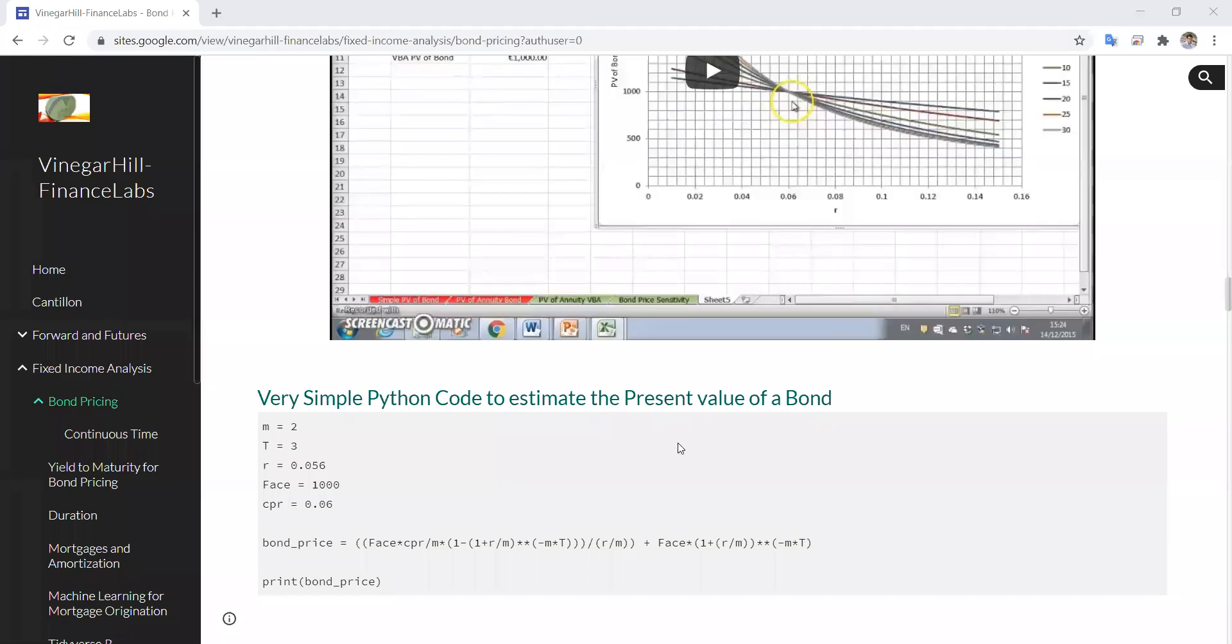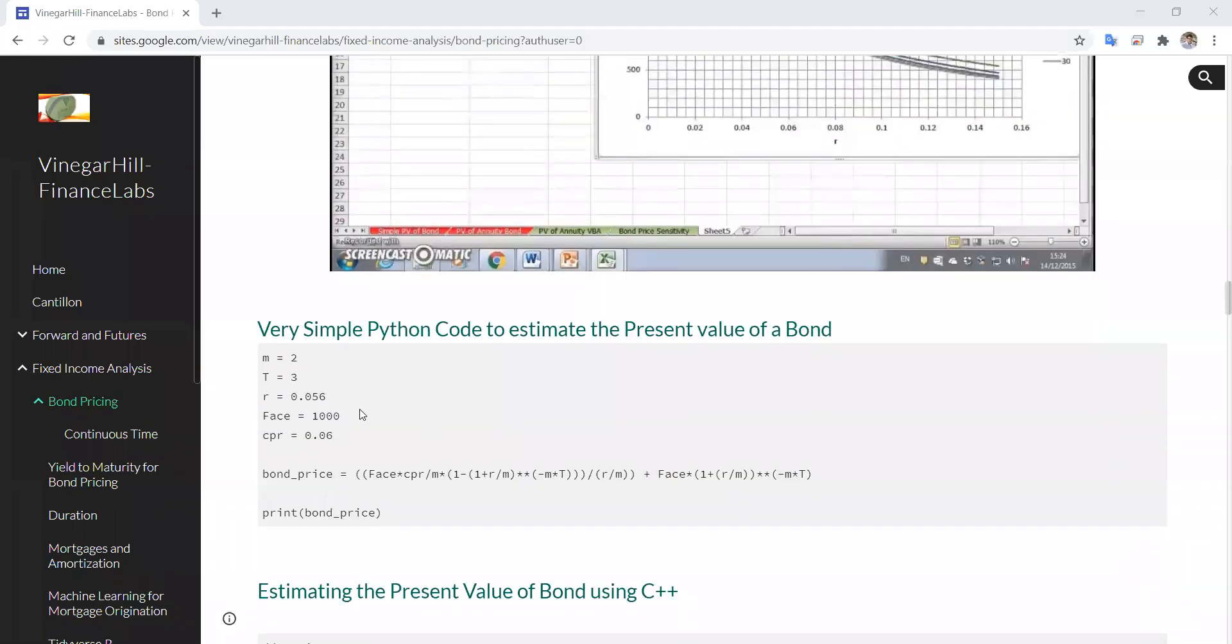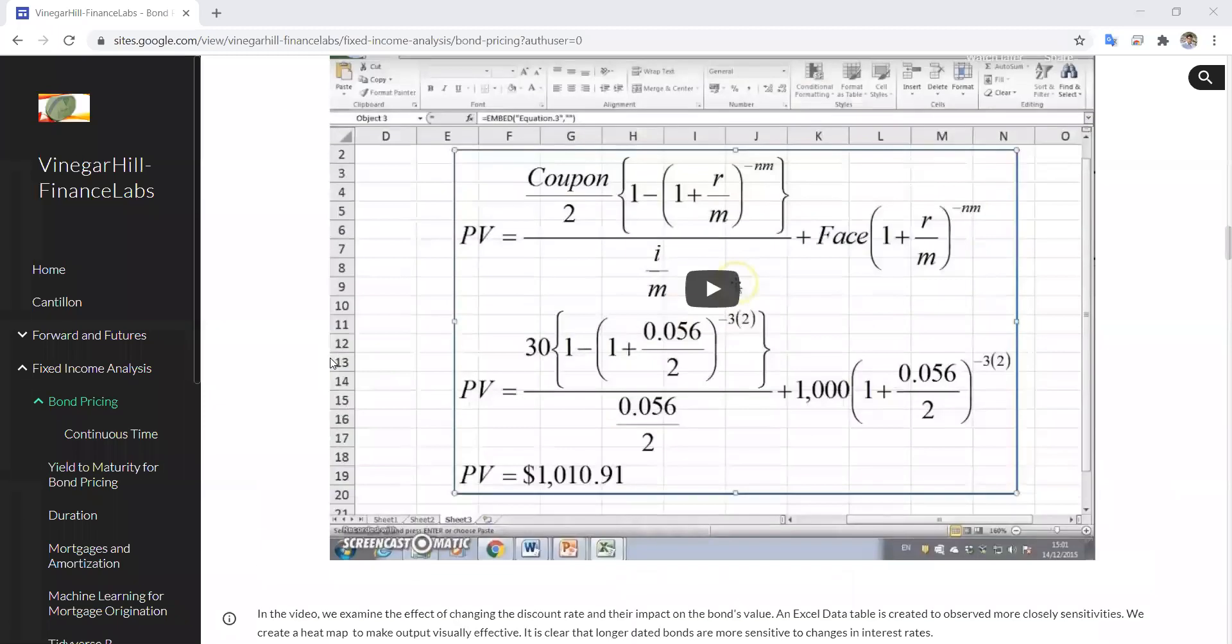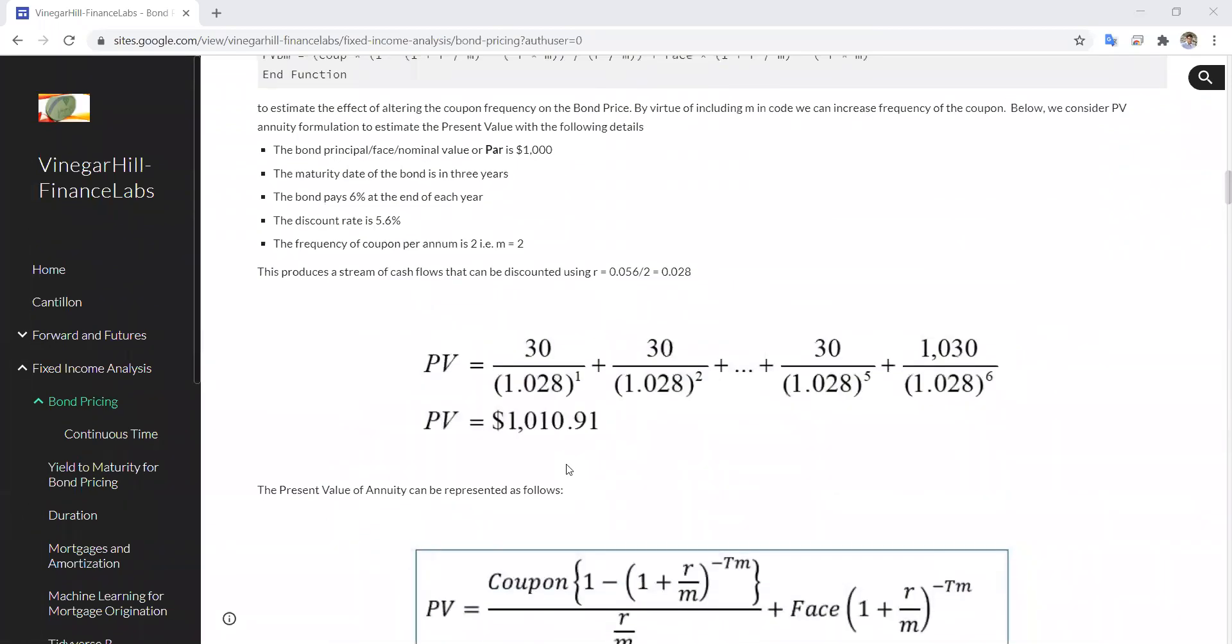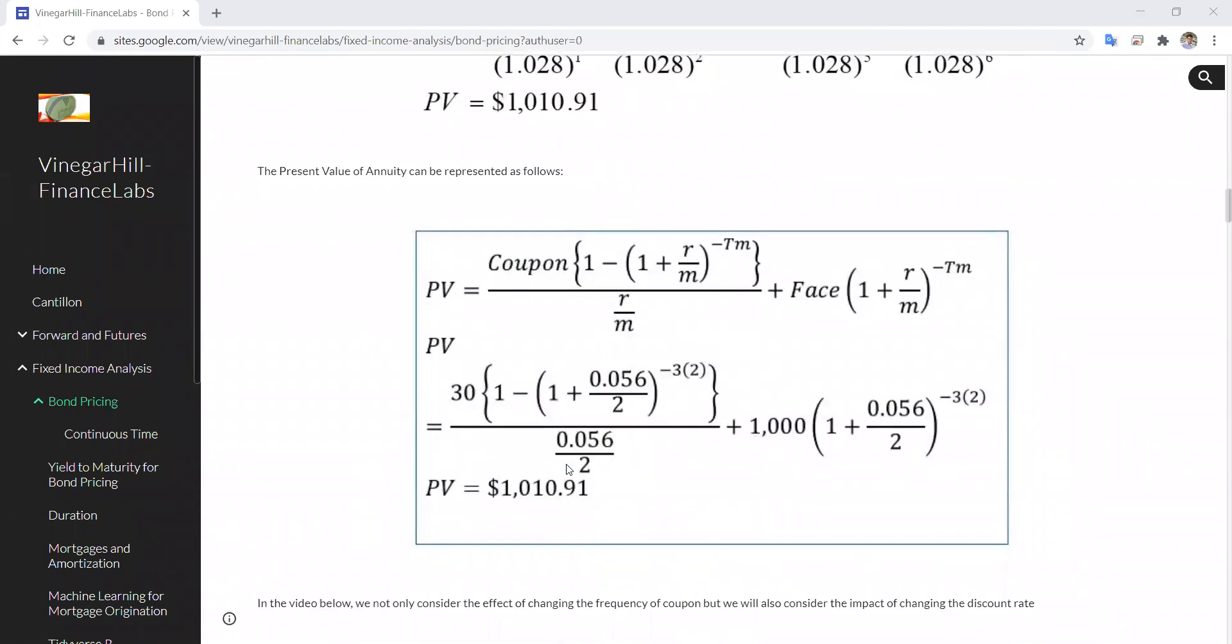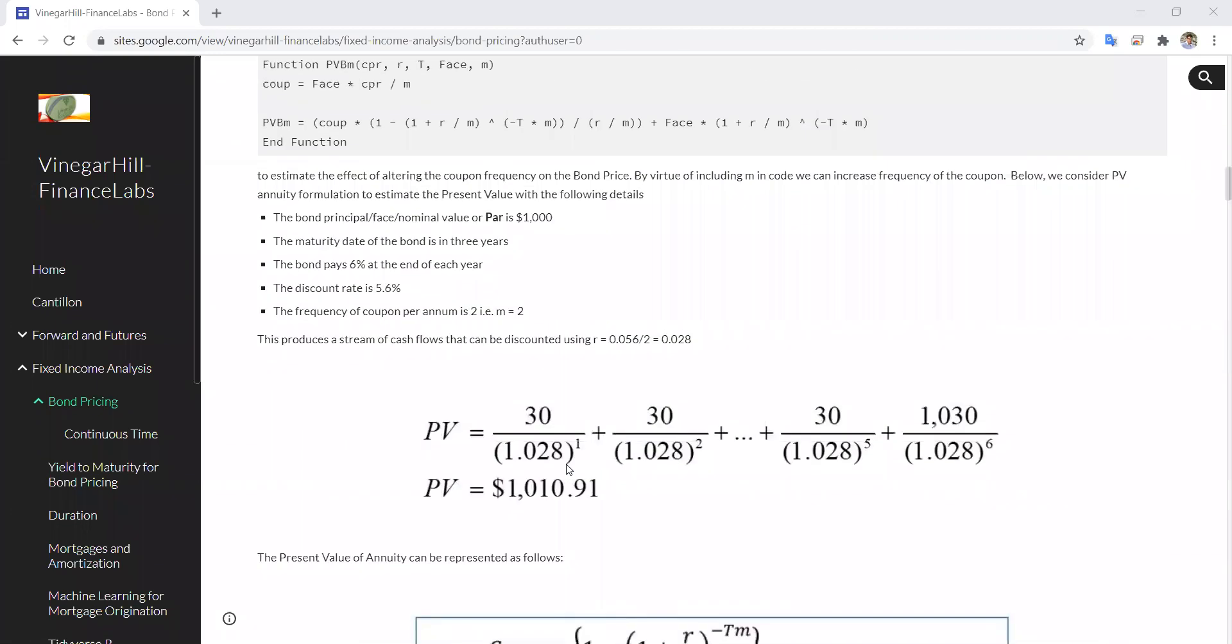In this video we have some very simple code for estimating the present value of a bond. It's based on this present value annuity formulation where we have 60 euros, a coupon rate of 6% with an interest rate of 5.6%, with a par value of 1,000.